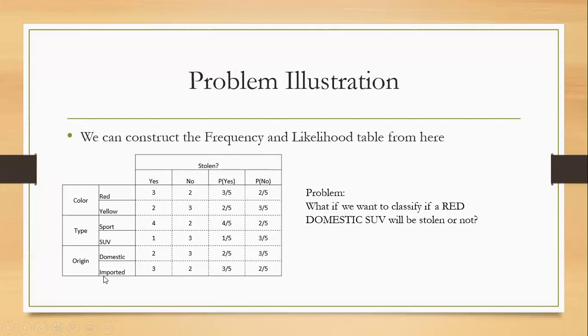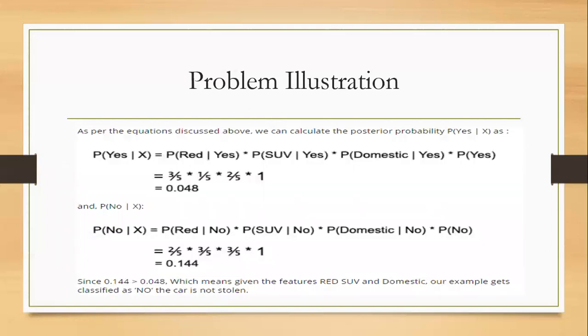We have got the problem. If we want to classify if a red domestic SUV is stolen or not. Given the equation we have from the previous slide, we can calculate for the posterior probability.